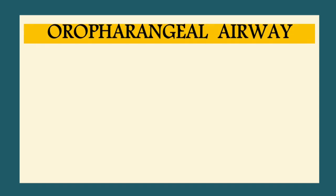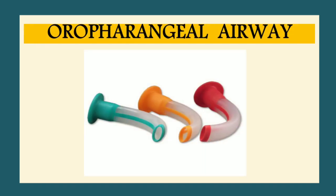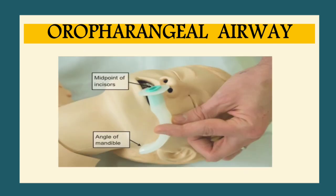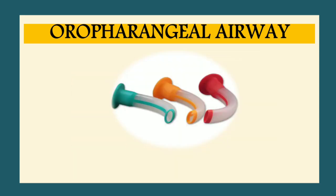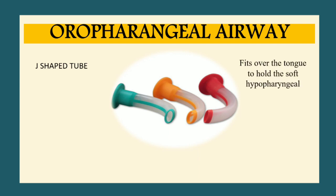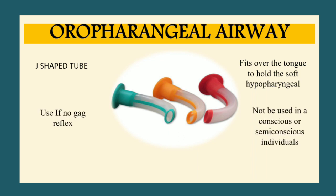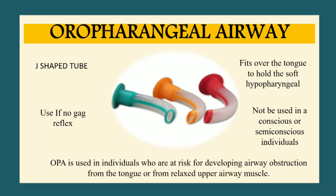Next, the oropharyngeal airway. It comes in different sizes and is measured from the midpoint of the incisors to the angle of the mandible. The oropharyngeal airway is a J-shaped tube that fits over the tongue to hold the soft hypopharynx open. Use it only if no gag reflex is present — it should not be used in a conscious or semi-conscious individual. It is used in individuals at risk for airway obstruction from the tongue or relaxed upper airway muscles.